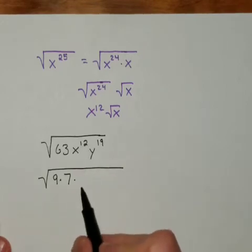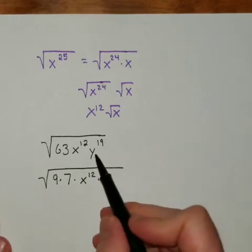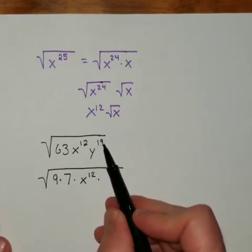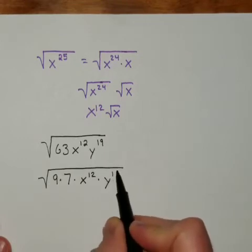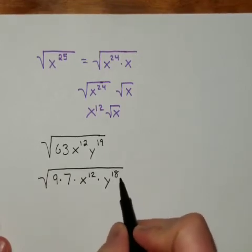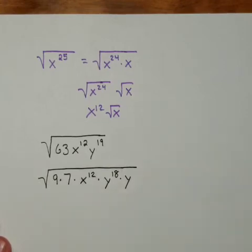x to the 12th, it's got an even power, so that is automatically a perfect square factor. y to the 19th, 19 is odd, so I need to make it even by peeling one off. So I'm going to make it y to the 18th times y. So now I've created as many perfect square factors as possible.